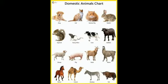Some animals are kept at a farm. They are called domestic animals, like cow, cat, and horse. They all are domestic animals because they are kept at a farm.